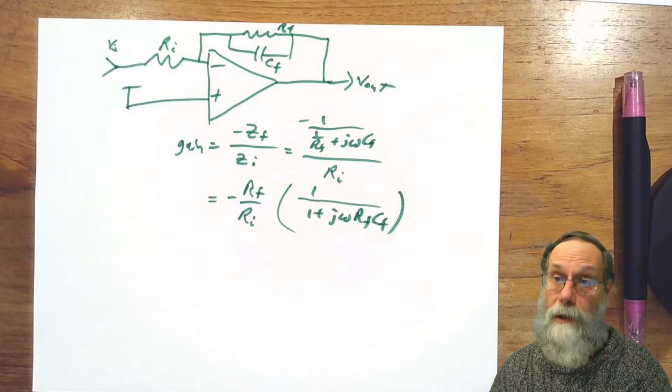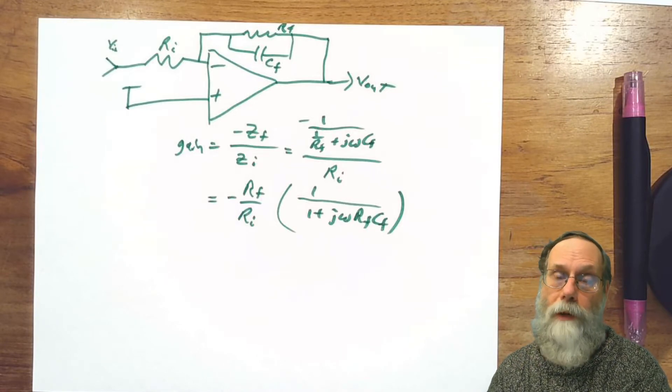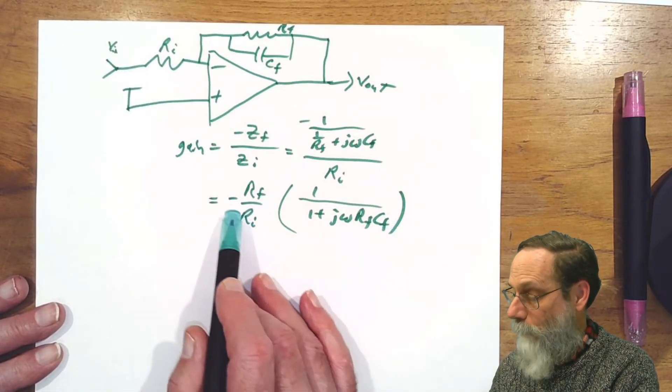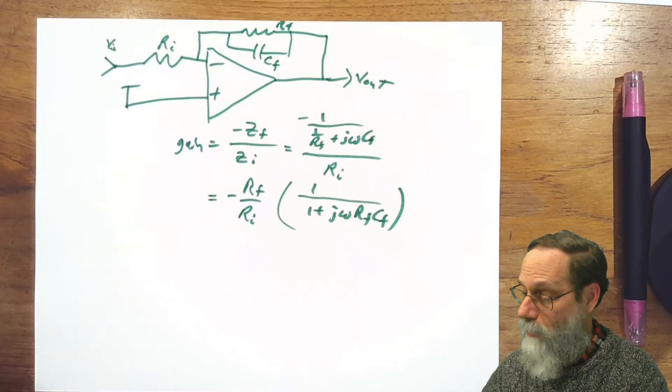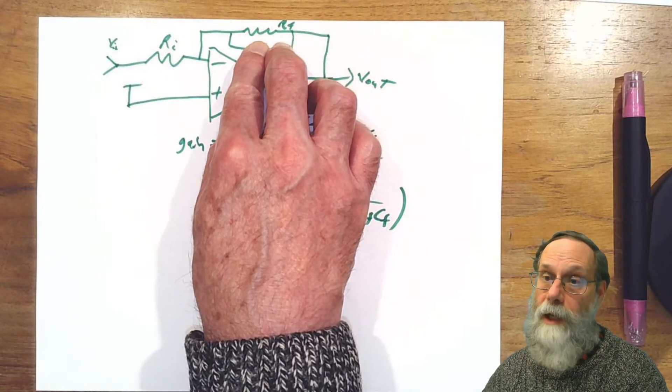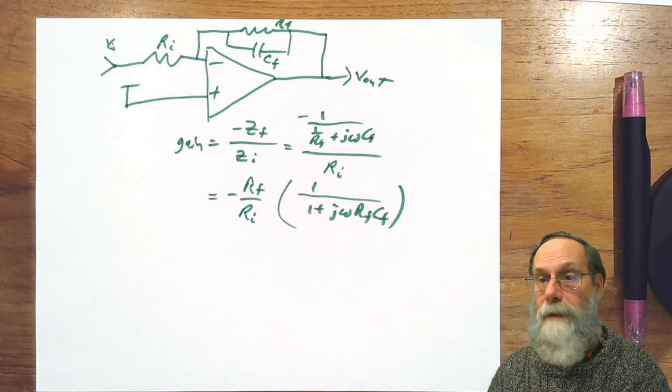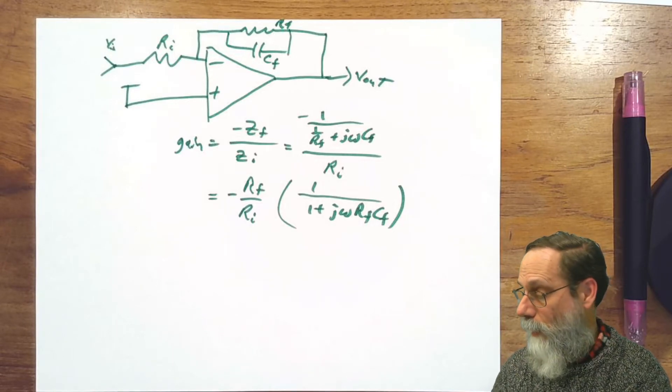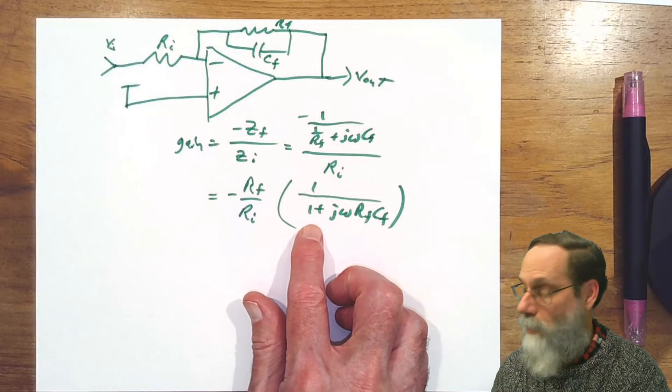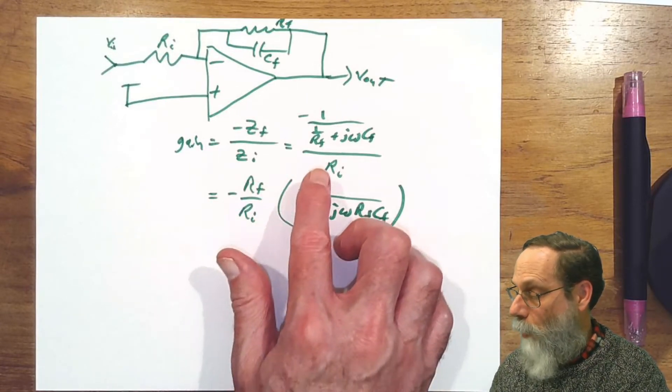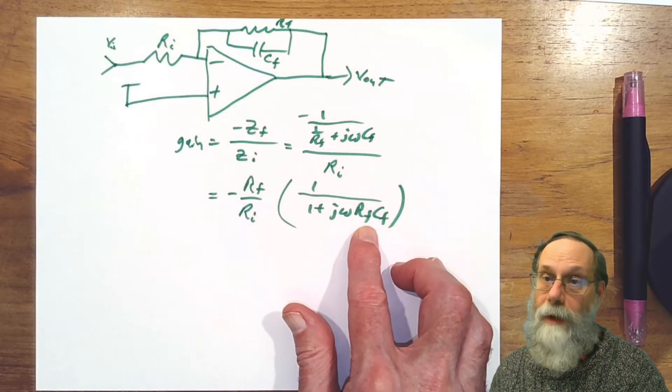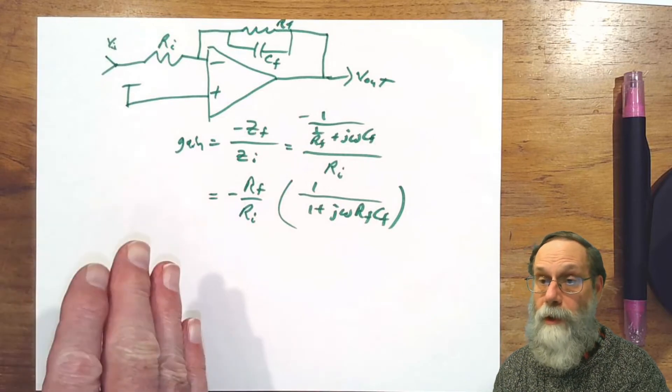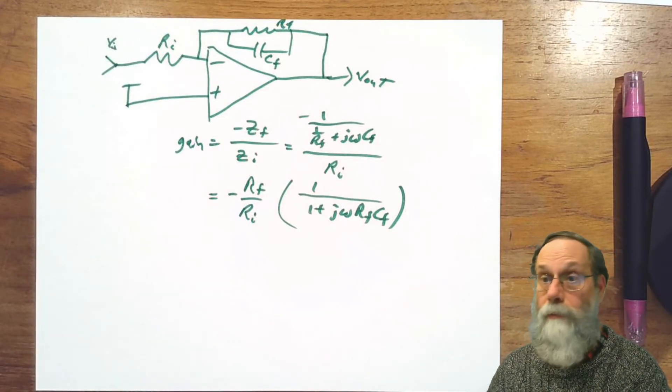We should take a look at what it does at low frequencies and at high frequencies. When omega goes to zero, the j omega Rf Cf term disappears, and we just have minus Rf over Ri. At very low frequencies, the capacitor becomes essentially an infinite impedance. At very high frequencies, the 1 plus term no longer matters much, and we get minus Rf over Ri times 1 over (j omega times the time constant Rf Cf), which drops with frequency at a rate of one decade per decade. So we're going to get a low-pass filter.